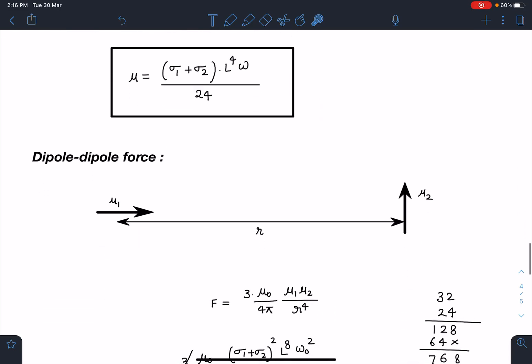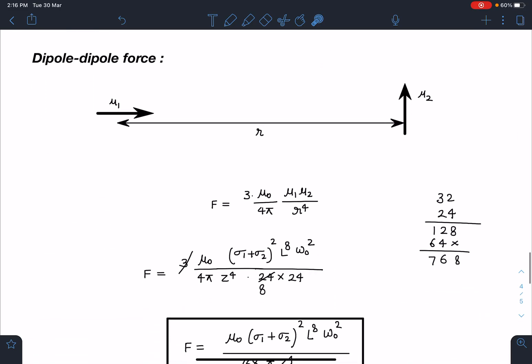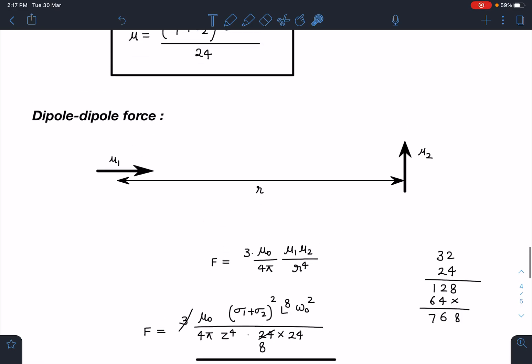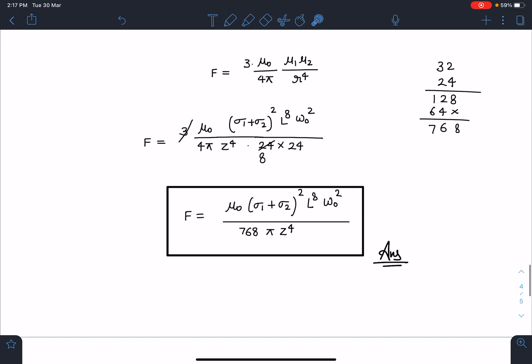Now dipole-dipole force can be calculated very easily. This is the configuration because the plane of rotation has been changed. So in this case, the formula becomes 3kμ₁μ₂/R⁴. You can refer to my previous video where I discussed dipole-dipole interaction in various configurations. If you know this formula, just substitute μ₁ = μ₂, and finally when we simplify we get μ₀(σ₁ + σ₂)²L⁸ω₀²/(768πz⁴). This is the final answer.